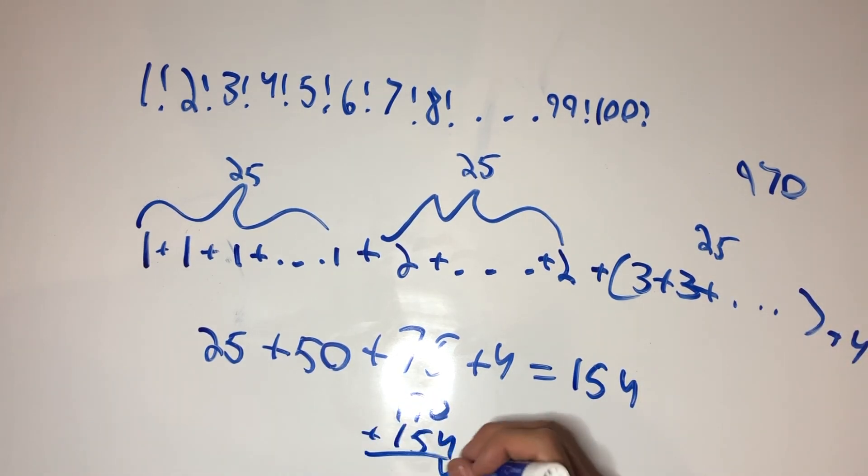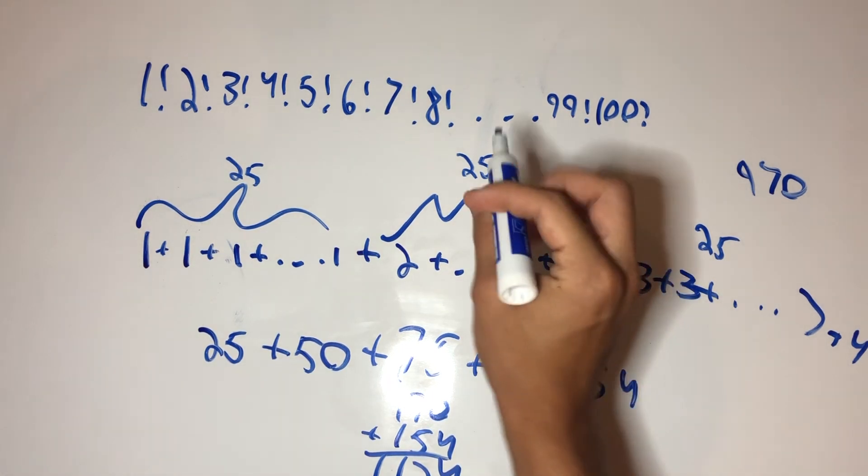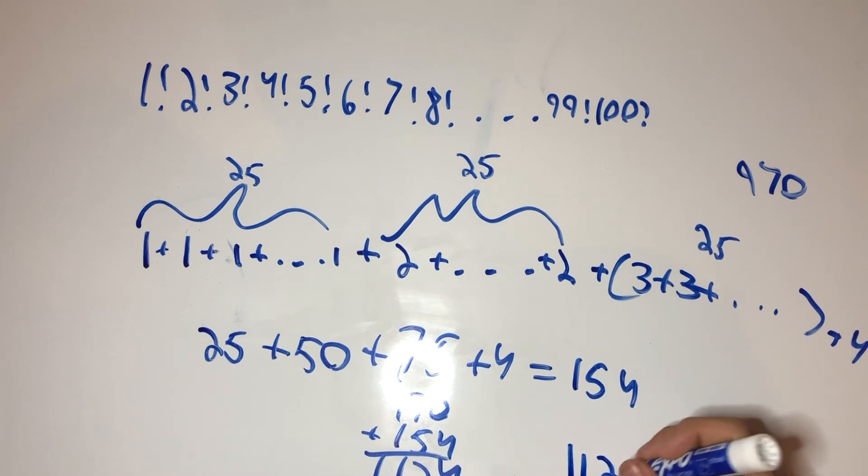It's going to give us 4, no, 1124. And this is our answer for how many 5s we have and how many 0s we have at the end of the number.